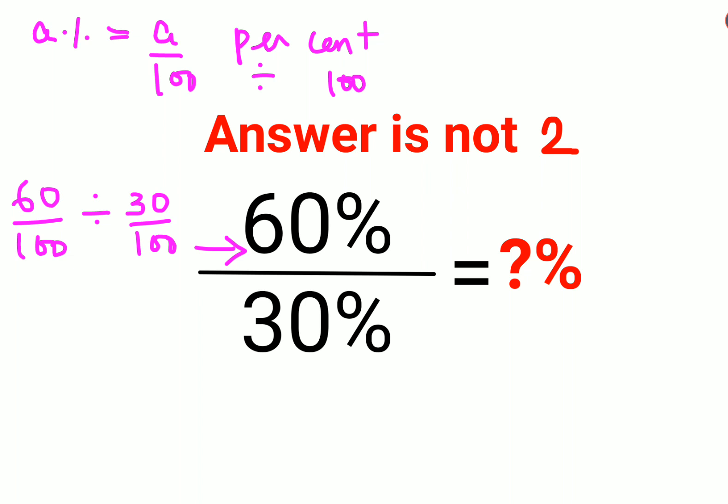Now, whenever you have a division situation, you will follow the rule of what KCF, where K stands for keeping the first fraction as it is. So this is 60 upon 100 and division. So C stands for changing the division sign to multiplication and F stands for flipping. So flipping or basically reciprocal of 30 upon 100 is 100 upon 30.